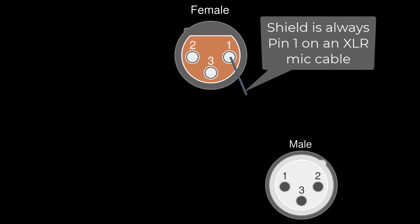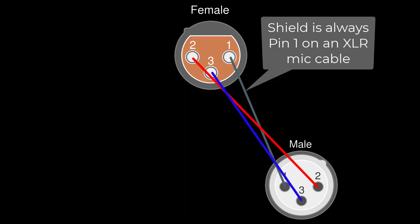If pin two is your red wire on the female XLR, then make sure the red wire also connects to pin two on the male end of the cable. On the XLR connector, the other conductor is then pin three on both ends of the cable.